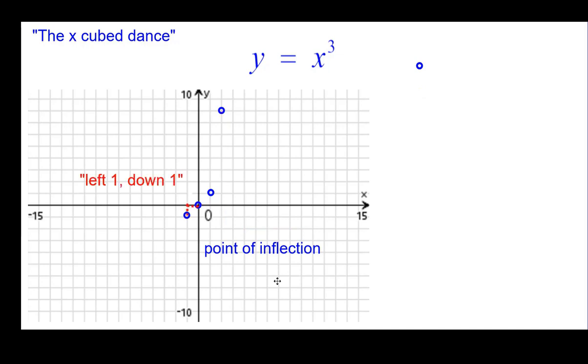Left 1 down 1, negative 1, the quantity cubed is negative 1. And negative 2, the quantity cubed is negative 8. So left 2 down 8. And that's the x cubed dance.